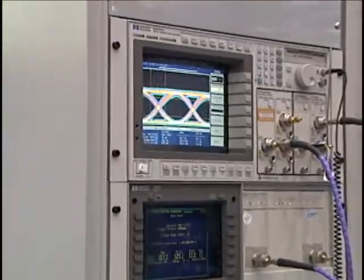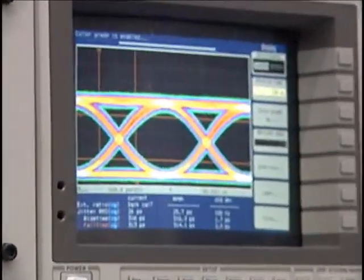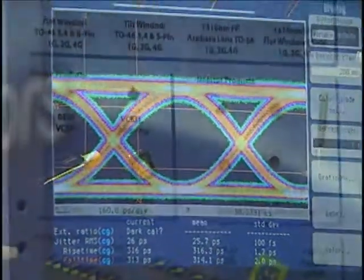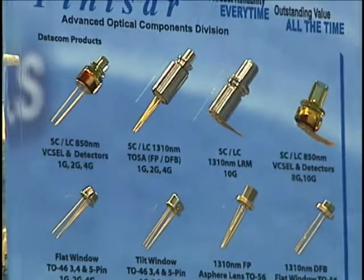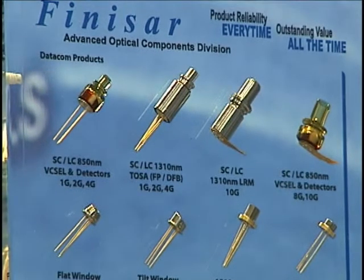VCSELs were originally operated at 850 nanometers, and their major industry impact was to create demand for laser-optimized multimode fibers to take advantage of their good coupling efficiency, high modulation rates, and low cost.